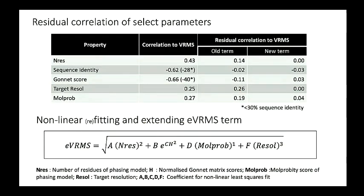So how does this correlate? The total correlation for all of this is given here. For example, if you see sequence identity and Gones score, they are comparable for the whole dataset, but if it is less than 30% sequence identity, you can see sharp difference between the two. For the old term, the residual correlation—the correlation of these properties with the difference between the refined VRMS and the estimated one—is shown here. You can see we have accounted for these in the new term.